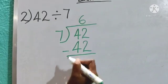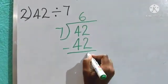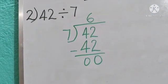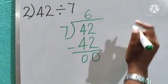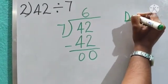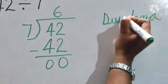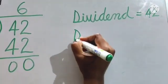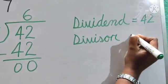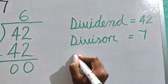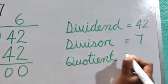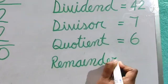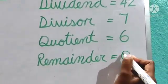Always give the subtraction sign here. Now we subtract: 2 minus 2 is 0, and 4 minus 4 is 0. So the dividend is 42, the divisor is 7, the quotient is 6, and the remainder is 0.